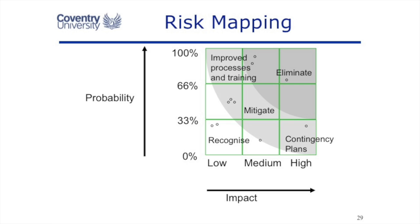Similarly, if our project was a one-year project, we could define a low risk as having a delay of up to three days, a medium risk as a delay of three to ten days, and a high risk as an impact of anything more than ten days.